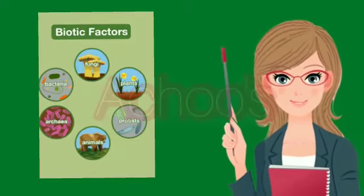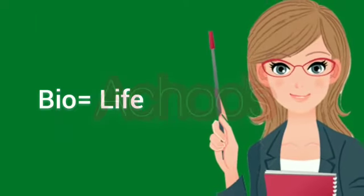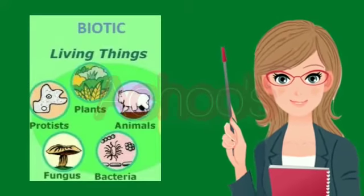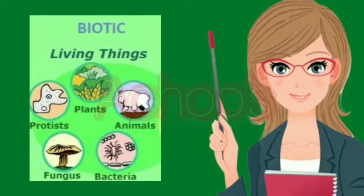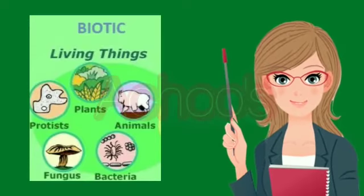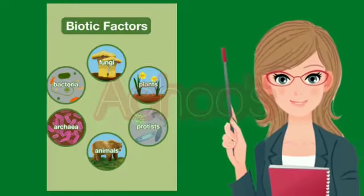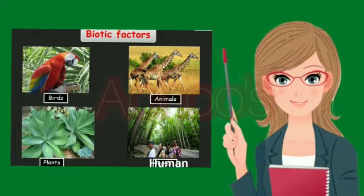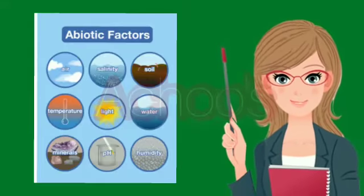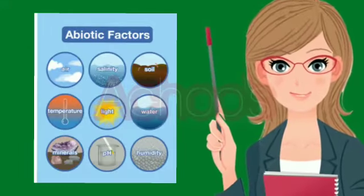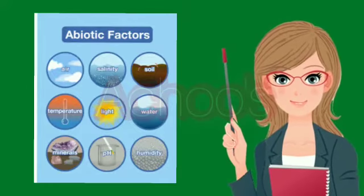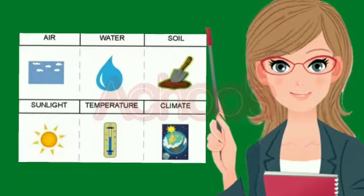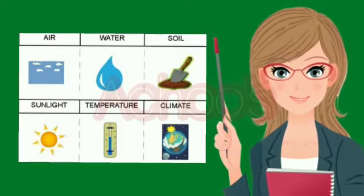What are biotic resources? The word 'bio' means life. So whatever resources that have life in them — meaning all the living components of the environment — are called biotic resources. For example, plants, animals, birds and human beings come under biotic resources. Abiotic resources include all the non-living components of the environment which do not have life, for example land, water, air and sunlight.